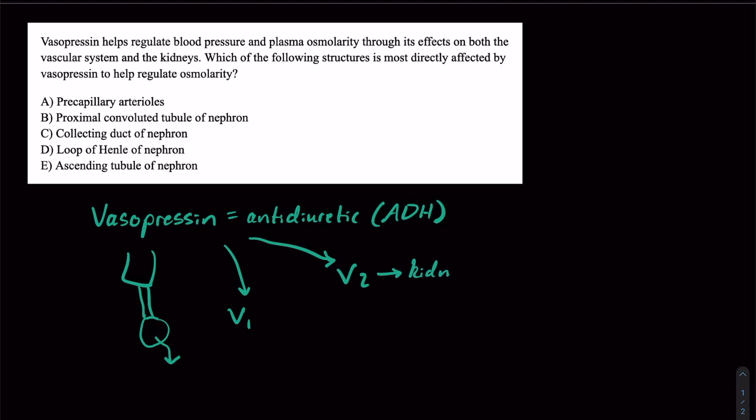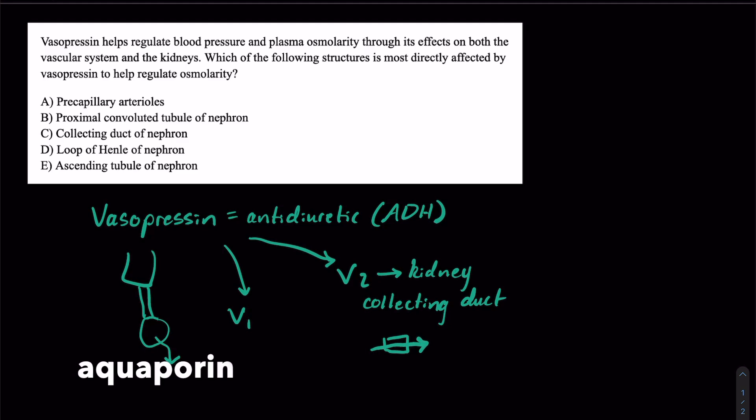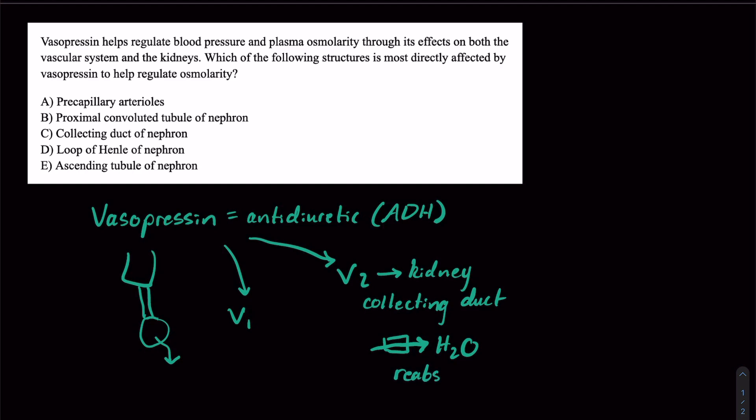And what it's going to do, specifically in the collecting duct, is it will mobilize aquaporins. Now aquaporins, as the name would suggest, allow the flow of water through them. And it allows us to reabsorb, which means going from the tubule into the blood, free water, which dilutes our blood and concentrates our urine.